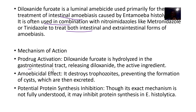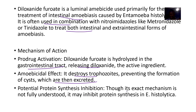The mechanism of action involves prodrug activation. It is hydrolyzed in the gastrointestinal tract to release diloxanide, which is the active ingredient. Diloxanide has an amoebicidal effect — it destroys trophozoites, preventing the formation of cysts which are then excreted. Though its exact mechanism is not fully understood, it is believed to inhibit protein synthesis in Entamoeba histolytica.